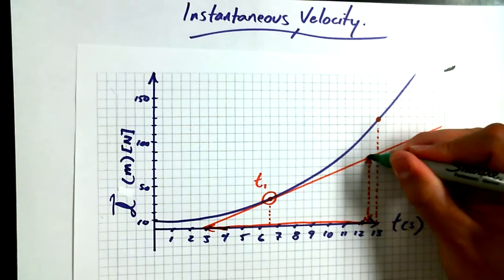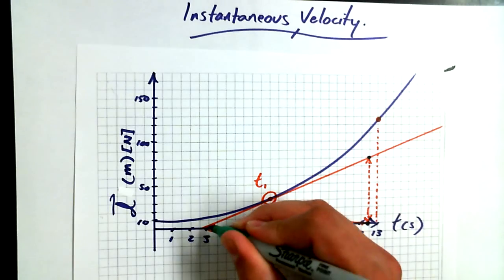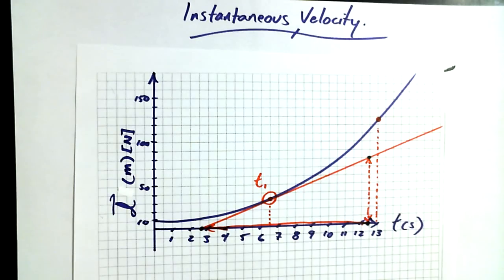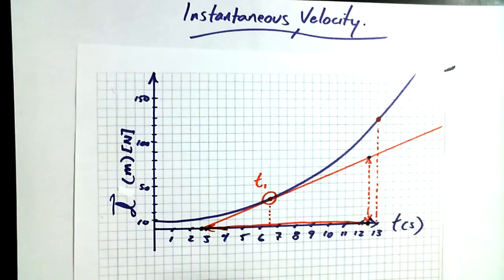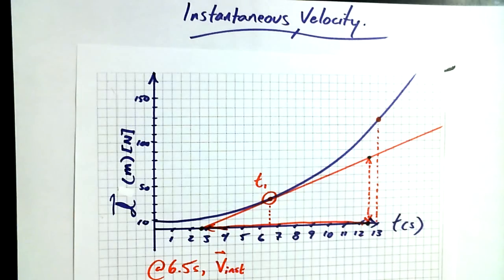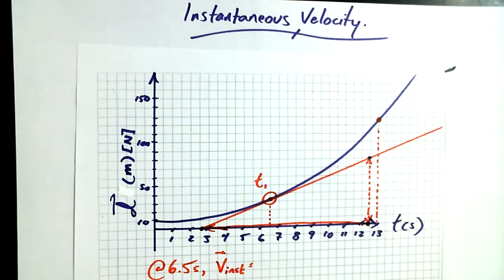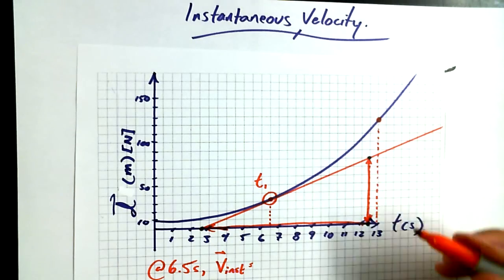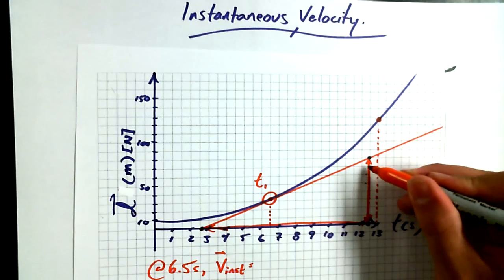I'll highlight the vertices a little bit just so they pop. If I find the slope of that tangent, what have I effectively found? At 6.5 seconds, we can find V instantaneous. The rise for the rate triangle looks like it goes up to 80.